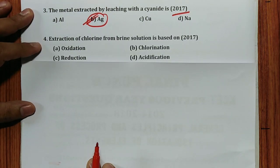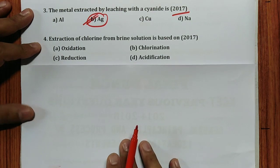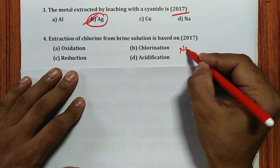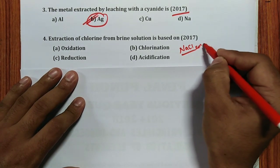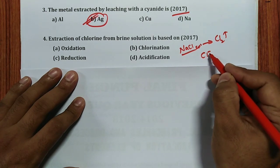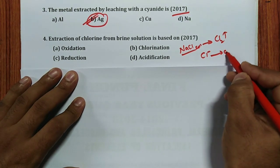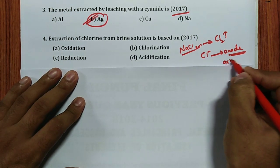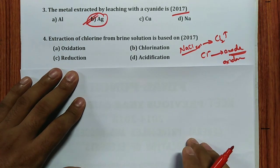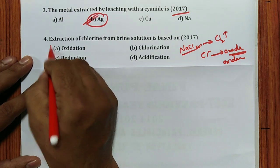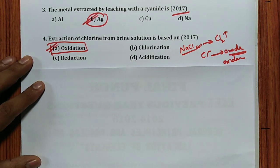Question 4: Extraction of chlorine from brine solution is based on — NaCl solution is electrolyzed; Cl₂ gas is liberated. Cl⁻ is an anion, which moves towards the anode; at the anode, oxidation takes place. Hence, the answer is oxidation.